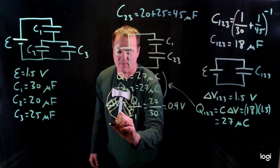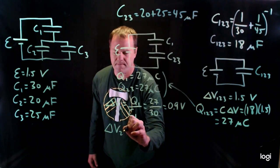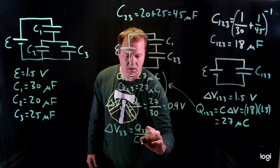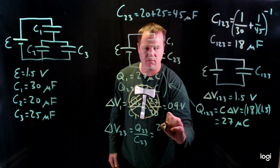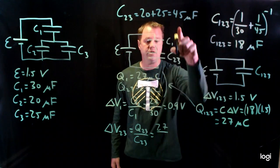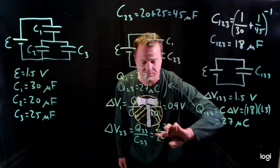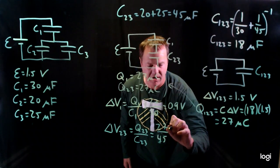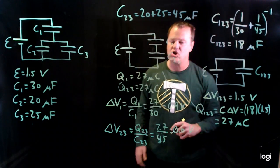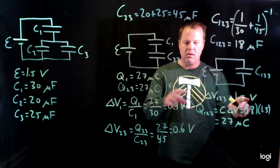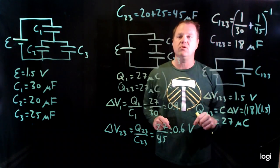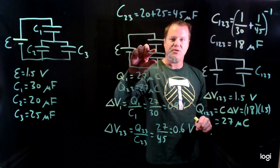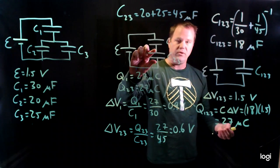And so then I can do the same thing for 2 and 3. And I have 27 in the numerator. And then the denominator is the group capacitance, 45. And so I get, throw that into my calculator and I get 0.6. And how I can check that is by this sum needs to add up to the group. So that 1.5 volts got divided. Capacitor 1 got 0.9. Capacitor group 2, 3 got 0.6 volts.